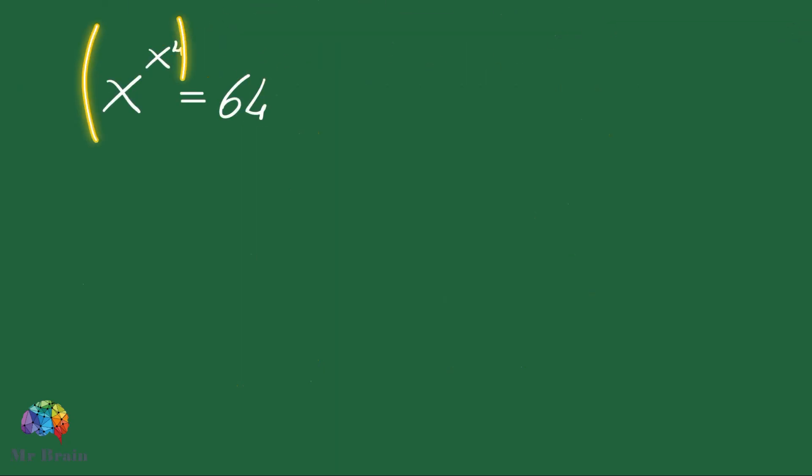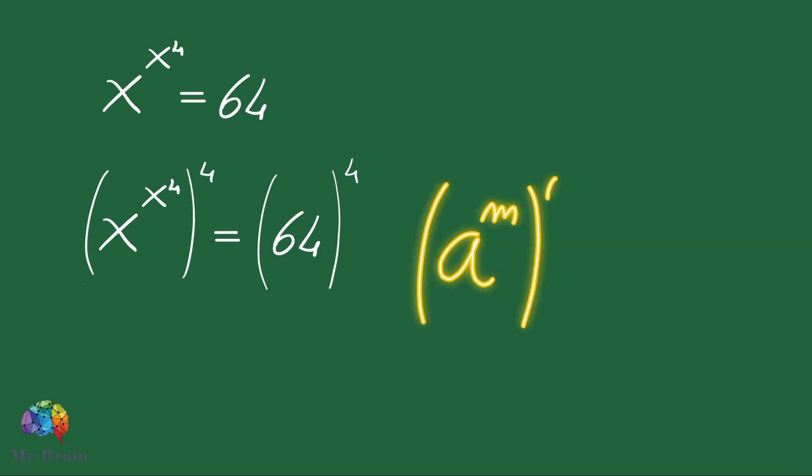The first step in solving the equation is to raise the left side and the right side of the equation to the power of 4. We apply to the left side of the equation the power of a power property. This property states that to find a power of a power we multiply the exponents.